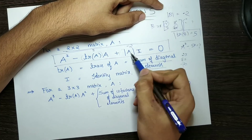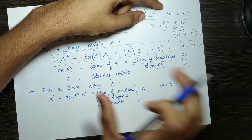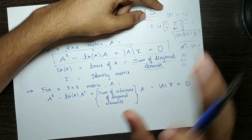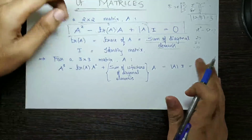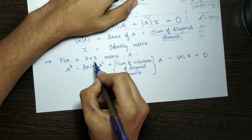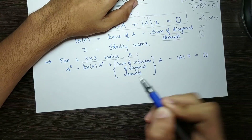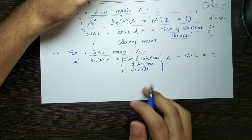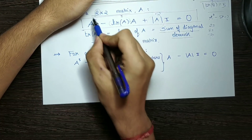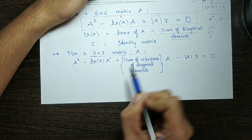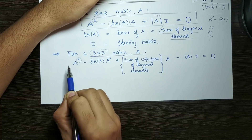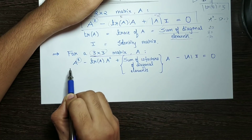You can see trace of A and determinant — you will solve this problem in literally 10 seconds. Therefore, we have the characteristic equation for a 3x3 matrix. A 2x2 matrix is order 2, and a 3x3 is the highest order in the characteristic equation.